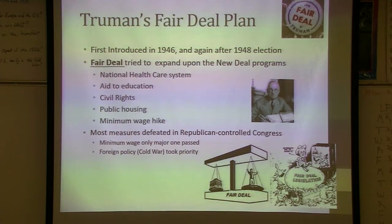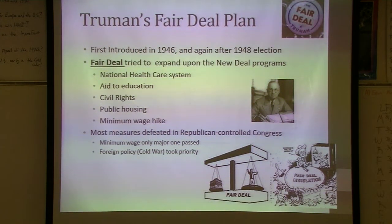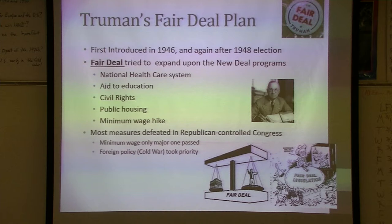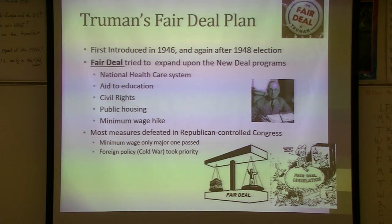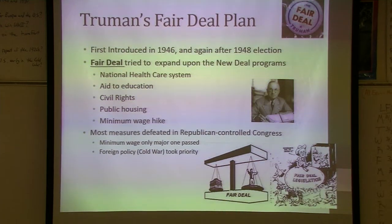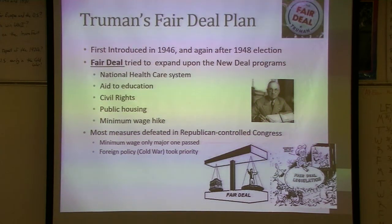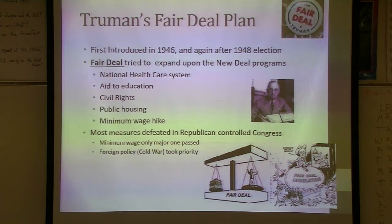Truman's plan was called the Fair Deal. He proposed many things, like a national health care system in 1948 that was never passed — what is Obamacare was actually first introduced over 50 years before. A lot of this was just an expansion upon FDR's New Deal policies. Between having a Republican-controlled Congress and the Cold War taking priority, hardly any of these things passed. A decade later, John F. Kennedy pushed these through with his New Frontier, but still most won't pass until Lyndon Johnson.